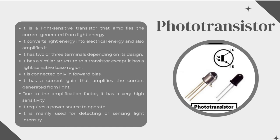Phototransistor. It is a light-sensitive transistor that amplifies the current generated from light energy. It converts light energy into electrical energy and also amplifies it. It has two or three terminals depending on its design, and has a similar structure to a transistor except it has a light-sensitive base region. It is connected only in forward bias and has a current gain that amplifies the current generated from light. Due to the amplification factor, it has very high sensitivity. It requires a power source to operate and is mainly used for detecting or sensing light intensity.